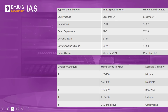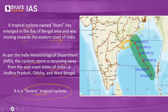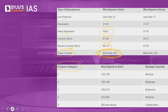What do we understand by a severe tropical cyclone? When it comes to categorization, every cyclone has a category based on wind speed. It is called a low pressure if wind speed is less than 31 km/h; depression if between 31 to 49 km/h; deep depression if between 49 to 61 km/h; cyclonic storm if between 61 to 88 km/h; severe cyclonic storm if between 88 to 170 km/h. Asani falls under the severe cyclonic storm category with wind speed between 88 to 170 km/h.